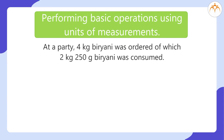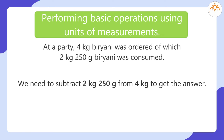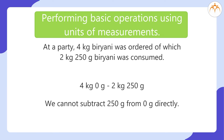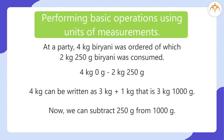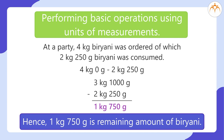At a party, 4 kilograms of biryani was ordered, of which 2 kilograms and 250 grams was consumed. We subtract 2 kg 250 g from 4 kg. We cannot subtract 250 g from 0 g directly, so 4 kg is rewritten as 3 kg and 1000 g. Then 3 kg 1000 g − 2 kg 250 g = 1 kilogram and 750 grams. Hence, 1 kg and 750 g is the remaining amount of biryani.